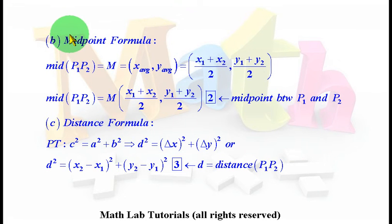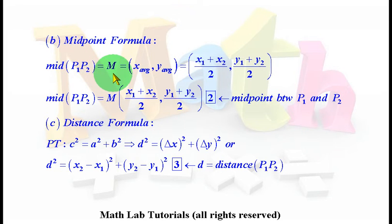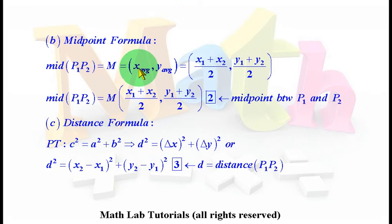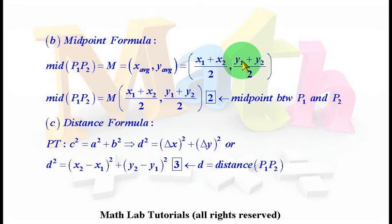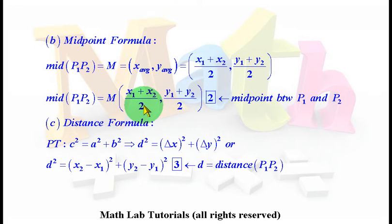In this slide, we discuss the midpoint formula. We write MID(P1, P2) for the midpoint between P1 and P2, and designate that point capital M. Reserve little m for slope and use capital M for midpoint so you don't get confused. The midpoint is just the average of the x-coordinates and the average of the y-coordinates. To average two numbers, you add and divide by 2. That constitutes the midpoint formula — equation 2 — giving the coordinates of M as the average of the x values and the average of the y values.